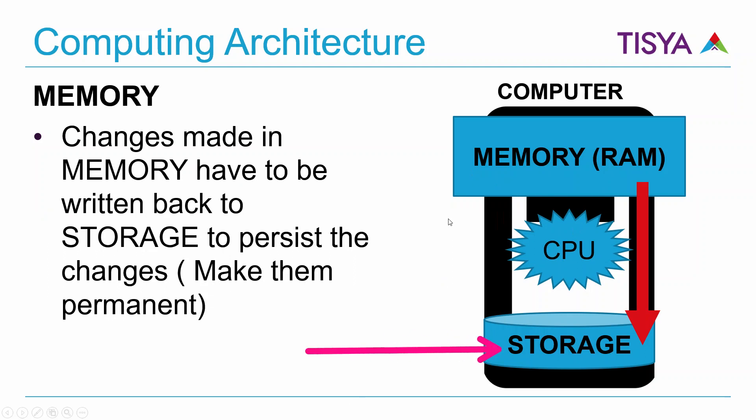Once data is brought into memory, any changes you do and any processing you do use the CPU resources on that computer. Once the changes are done and you want to save them, they have to be written back to storage. The data kept in storage is persisted and available, whereas data in memory is volatile — it is only accessible while the computer is on. So from time to time you write it down, which is exactly what you do whenever you save a file you're working with.